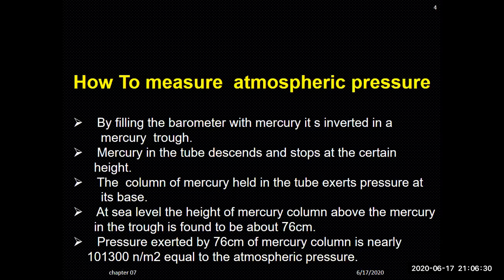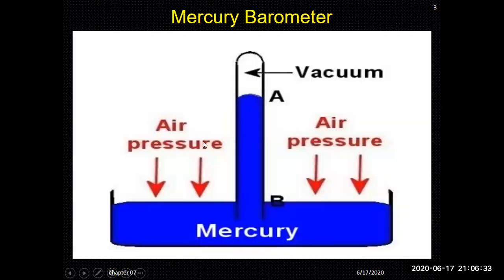Looking at the diagram, the tube is already filled and placed inverted inside a trough containing mercury. Due to gravitational force, the mercury moves in the downward direction. At the same time, atmospheric pressure exerts force from the open surface on both the right and left sides, which acts to stop the mercury from moving further down. A stage is reached at sea level where there is no further motion of mercury in the downward direction.